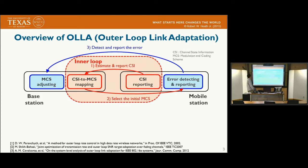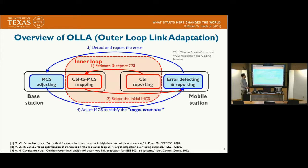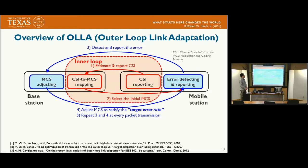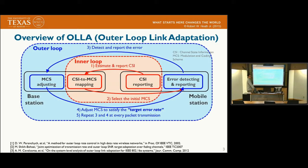The concept of outer-loop link adaptation is like this: the mobile station detects the coding error and reports it to the base station. Then the base station adjusts its MCS level to satisfy the target error rate. For example, if the error happens too frequently, the base station lowers the MCS level. On the other hand, if there is no error at all, the base station increases the MCS level. Steps 3 and 4 are repeated at every packet transmission. This is called the outer-loop link adaptation.